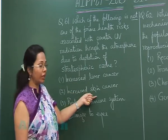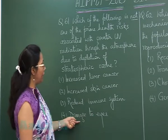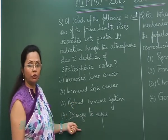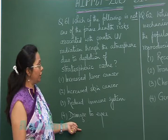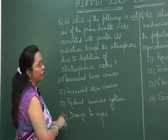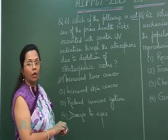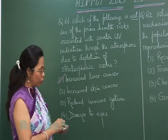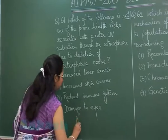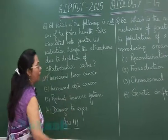The other choices — increased skin cancer, reduced immunity, and damage to the eyes — are certainly related to UV radiation. So the answer is increased liver cancer, because this is not linked to exposure to UV rays. The answer is option one.